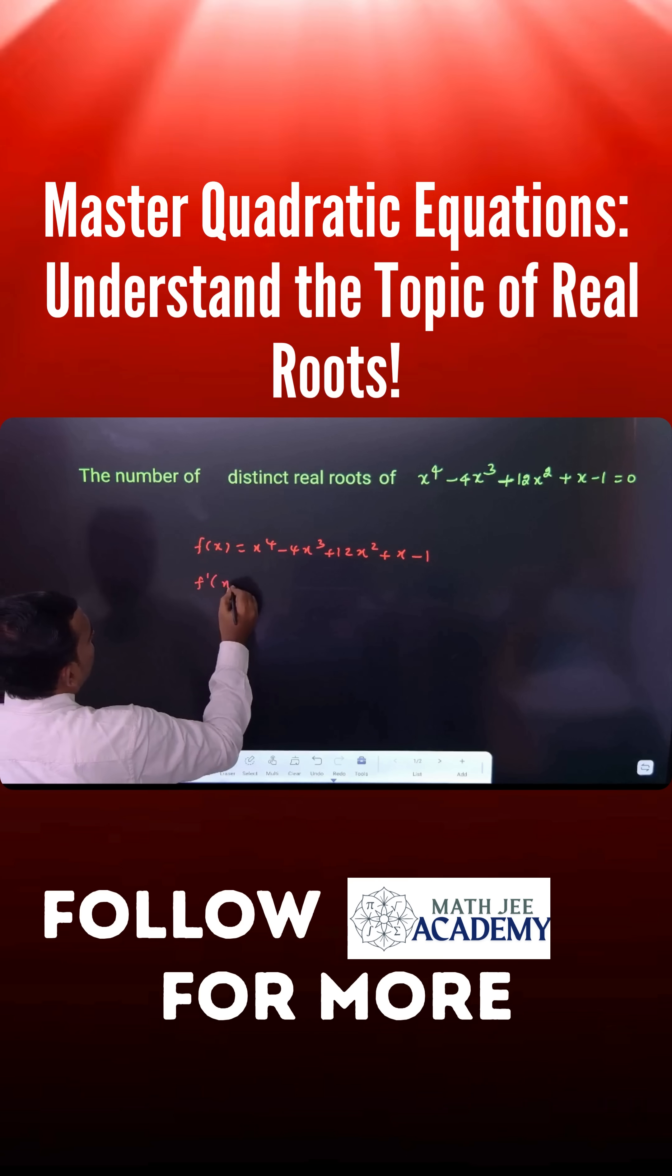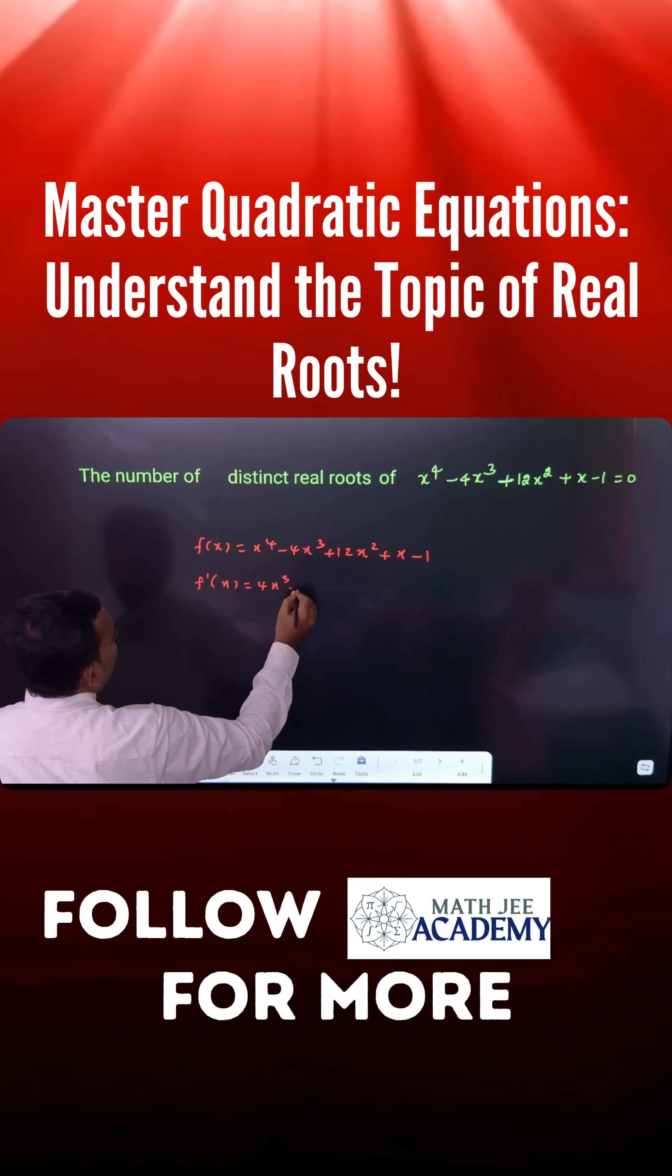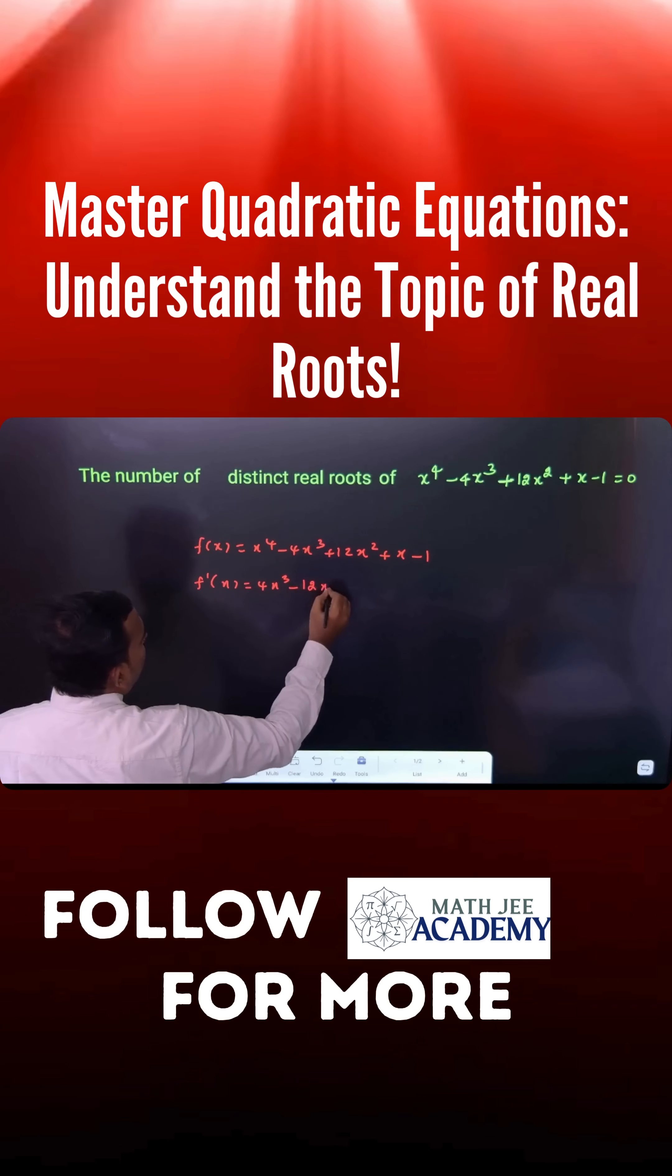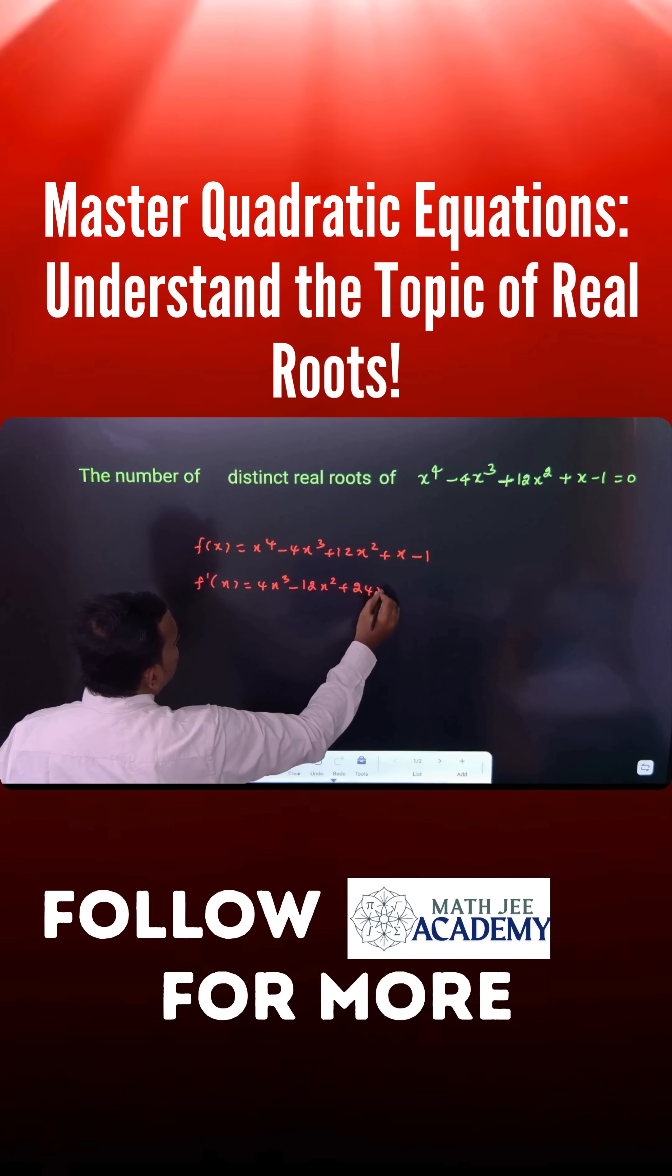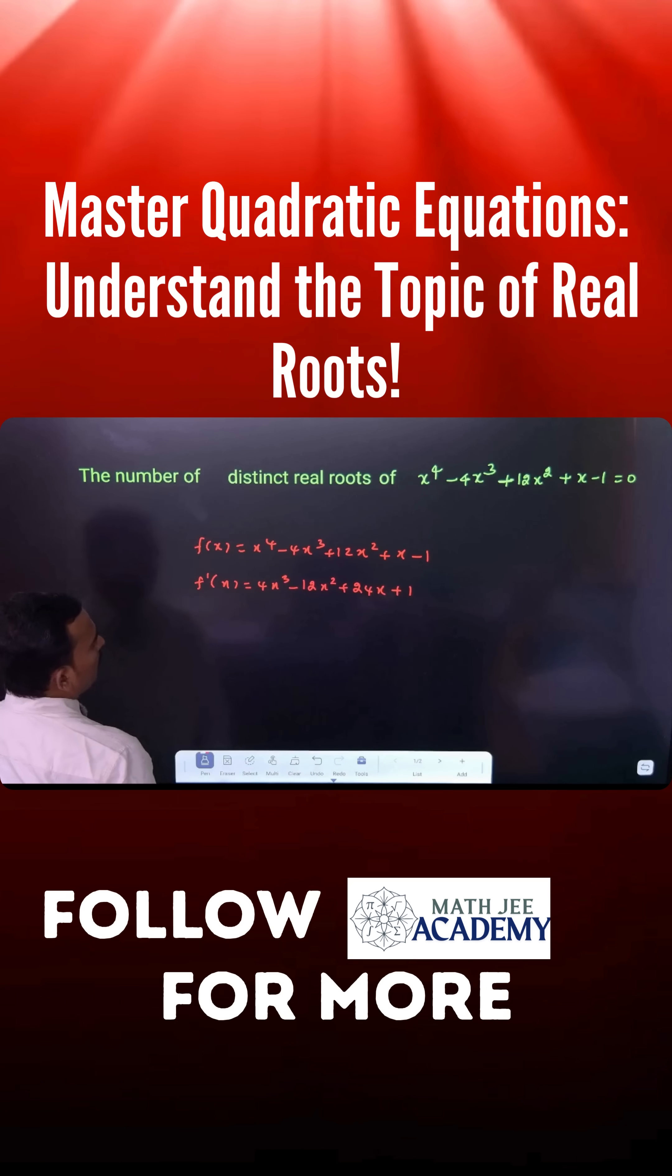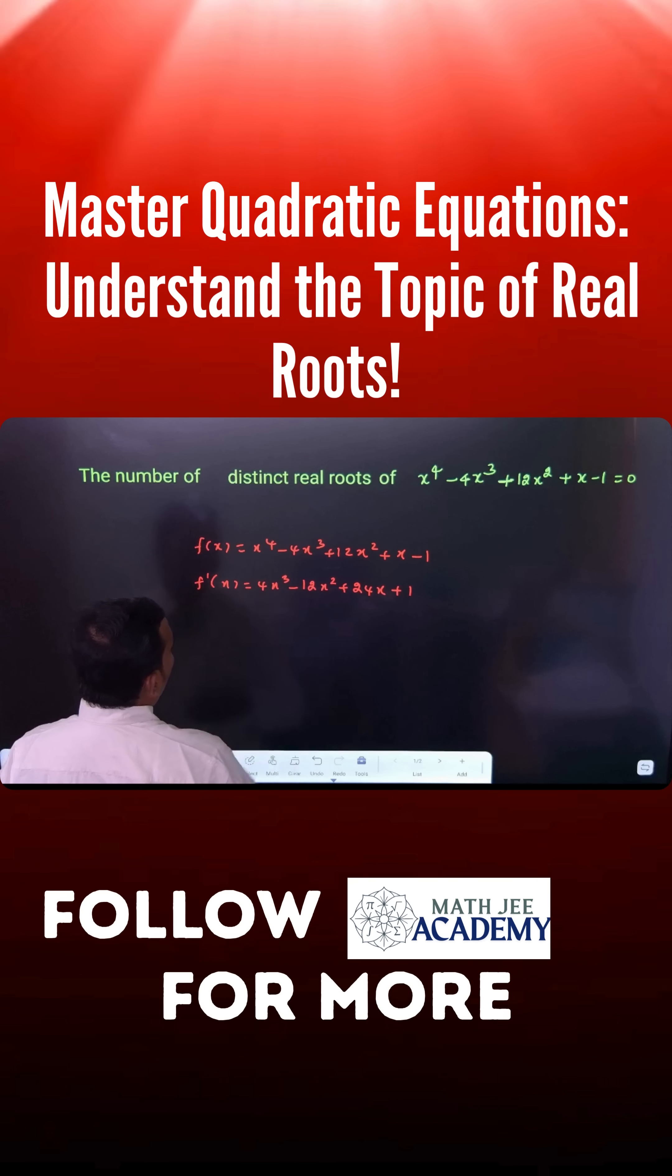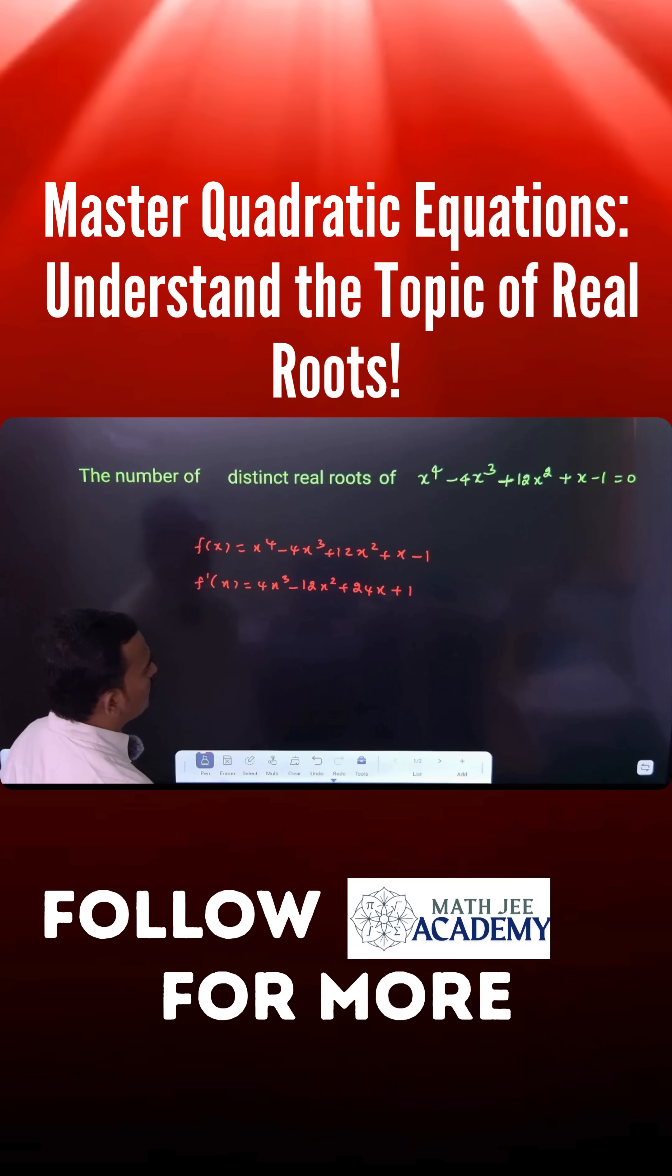If you differentiate this function, you get 4x^3 - 12x^2 + 24x + 1. But you can see there is no way to factorize this.